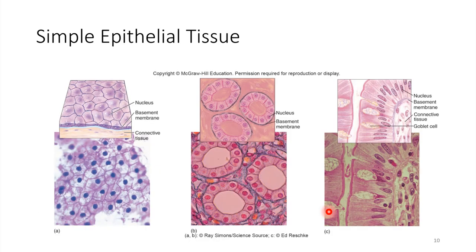For simple epithelium, starting on the left, look at the purple layer on top — that represents the epithelial layer. See how flattened these cells are, kind of squished down flat. This is a great example of squamous cells, so simple squamous epithelium. This is great for allowing rapid diffusion. Imagine your lungs: gases like oxygen diffuse into the tissues, and carbon dioxide waste diffuses out. The thinness of that cell layer really helps facilitate rapid diffusion of substances.